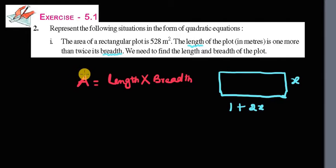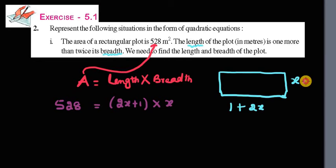Here, the given value is 528. So 528 equals the length, which we have taken as 1 plus 2X, or we can write it as 2X plus 1, times the breadth, which is X. Assuming length and breadth are in meters.